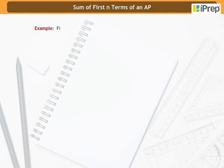For example, find the sum of 11 terms of an AP: 1 by 15, 1 by 12, 1 by 10, and so on.